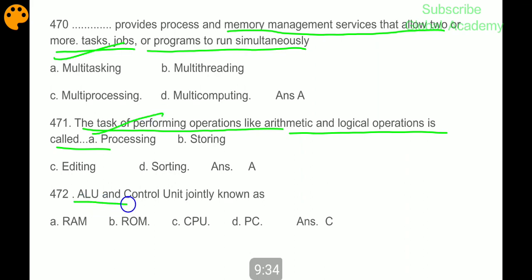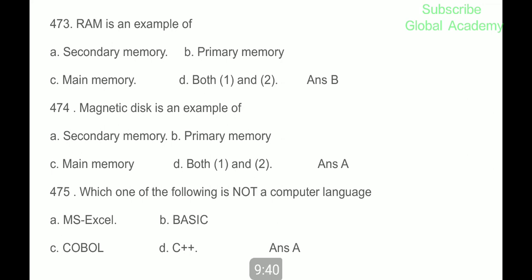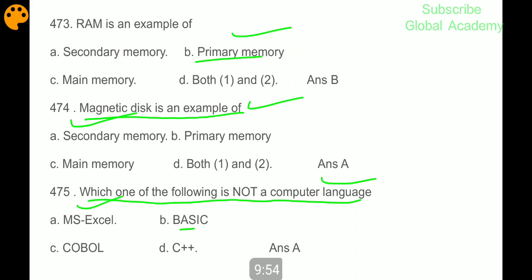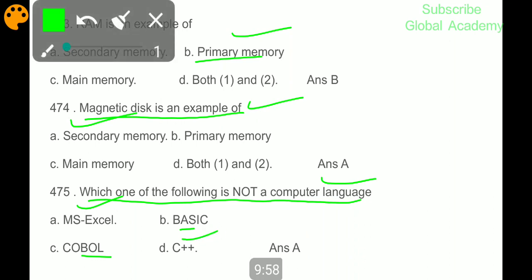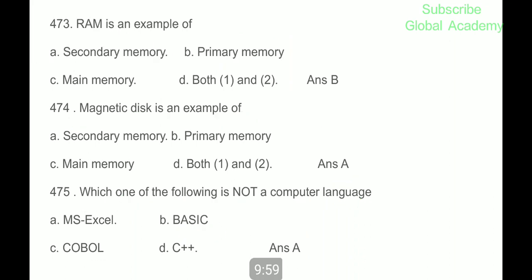ALU and control unit jointly known as CPU. RAM is an example of primary memory. Magnetic disk is an example of secondary memory. Which one of the following is not a computer language? MS Excel - it is not a computer language. Others: BASIC, COBOL and C++ - they are all computer languages. MS Excel is an office software.